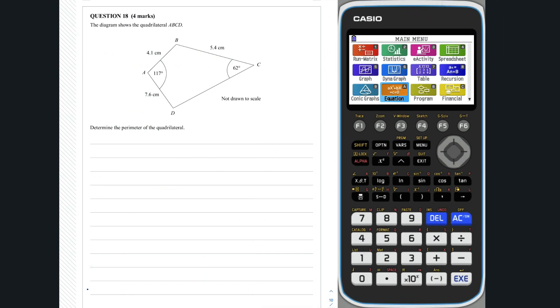Question 18. To solve this problem, draw a straight line connecting the points B and D. By determining the length of BD, we will be able to calculate DC and hence determine the perimeter of the quadrilateral. In the triangle ABD, we can use the cosine rule to work out the length BD.